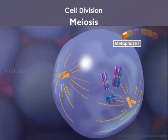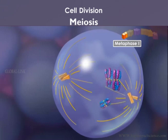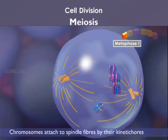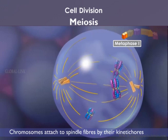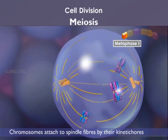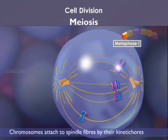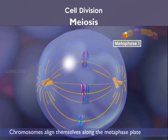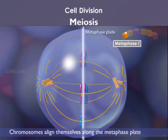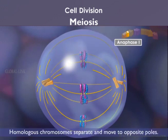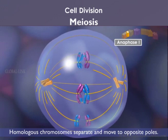During metaphase 1, the spindle fibers are now completely formed. The chromosomes, still associated as bivalents, are tied to the spindle fibers by their kinetochores. The chromosomes now align along the metaphase plate such that the homologous chromosomes orient towards the opposite poles. The cell then enters anaphase 1, where the homologous chromosomes separate and move to the opposite poles.